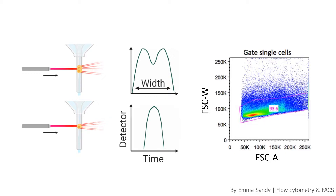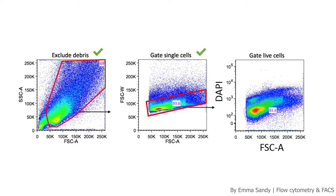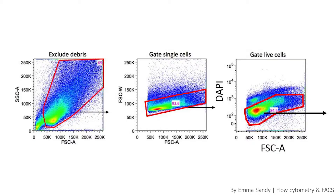Next we want to look at only the living cells. To do this you can use lots of dyes, and the most common one is DAPI. DAPI stains the DNA of cells but it can only pass into cells that are dead. So here we swap the y-axis for DAPI. You can see there's a section of dead cells at the top that have taken in the DAPI dye, and a population of cells below that haven't — those are the living cells. We select the living cells and take them forward for the next analysis.